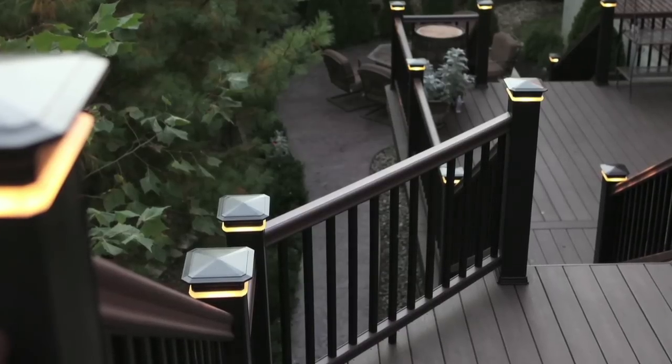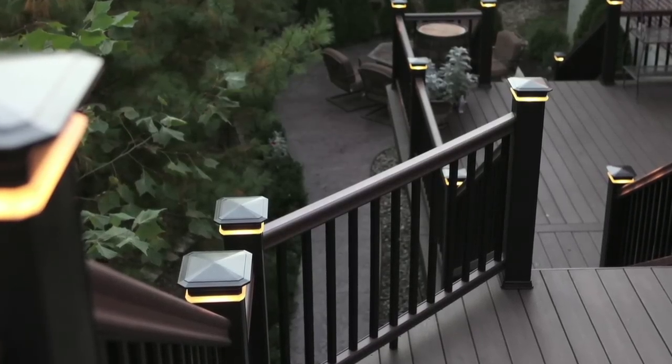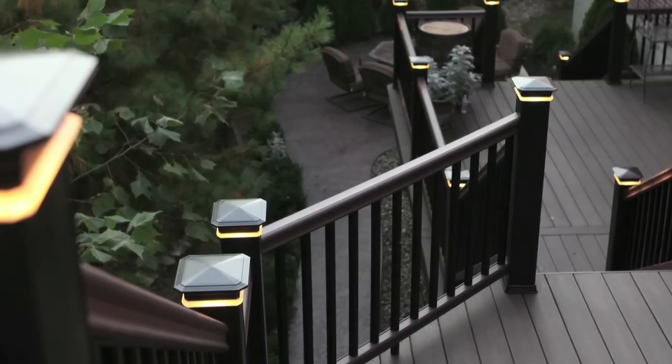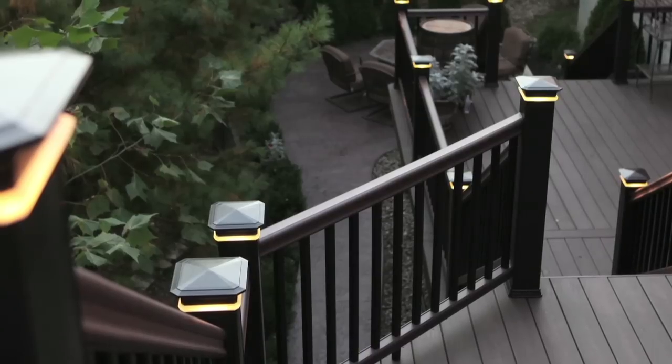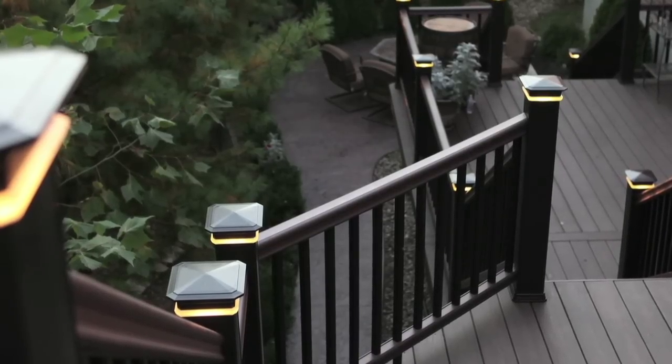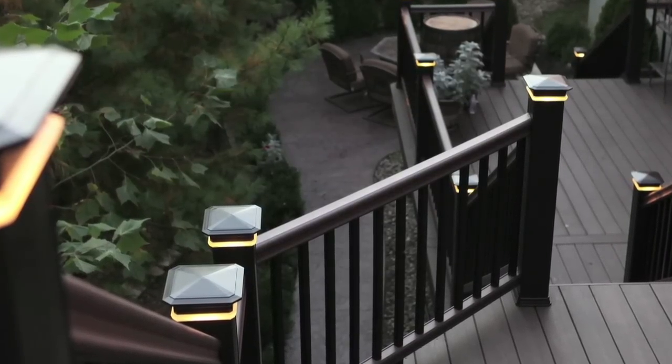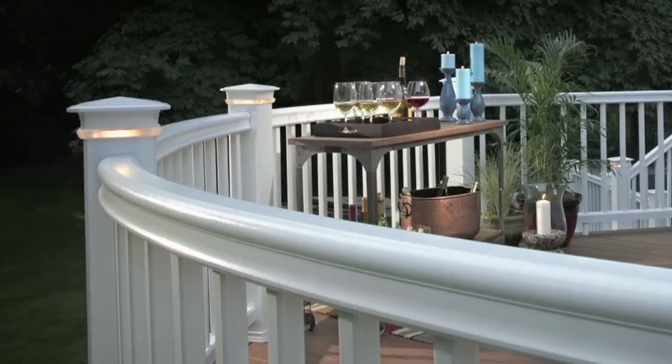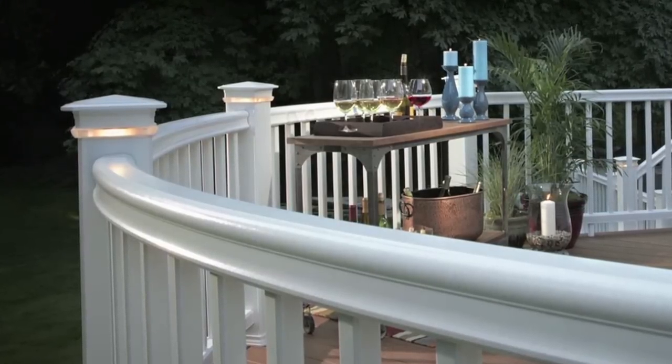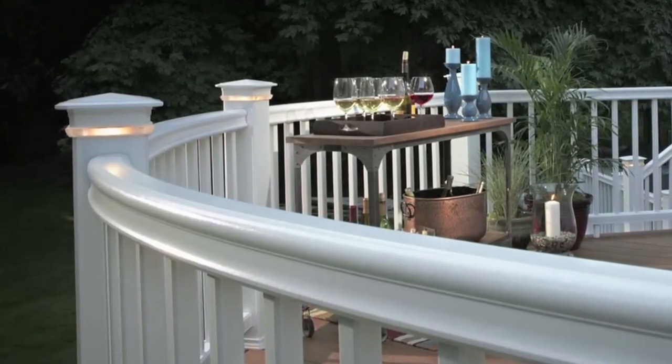A 100-watt transformer and an optional dimmer are available for TimberTech and AZEK lighting. The dimmer includes a remote that allows the homeowner to reduce the output of the lights to the desired level. The transformer and the optional dimmer should be installed in close proximity to each other.